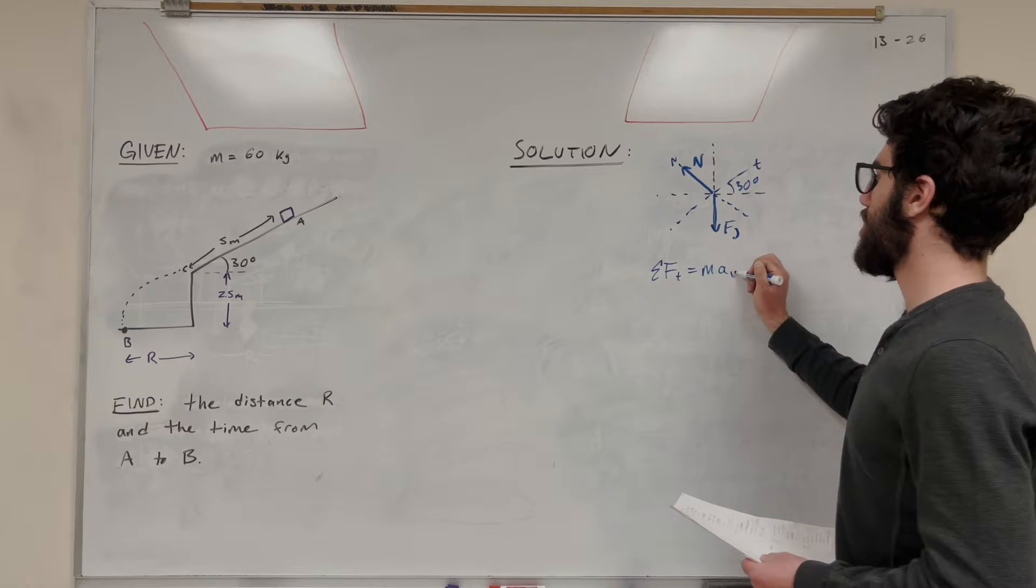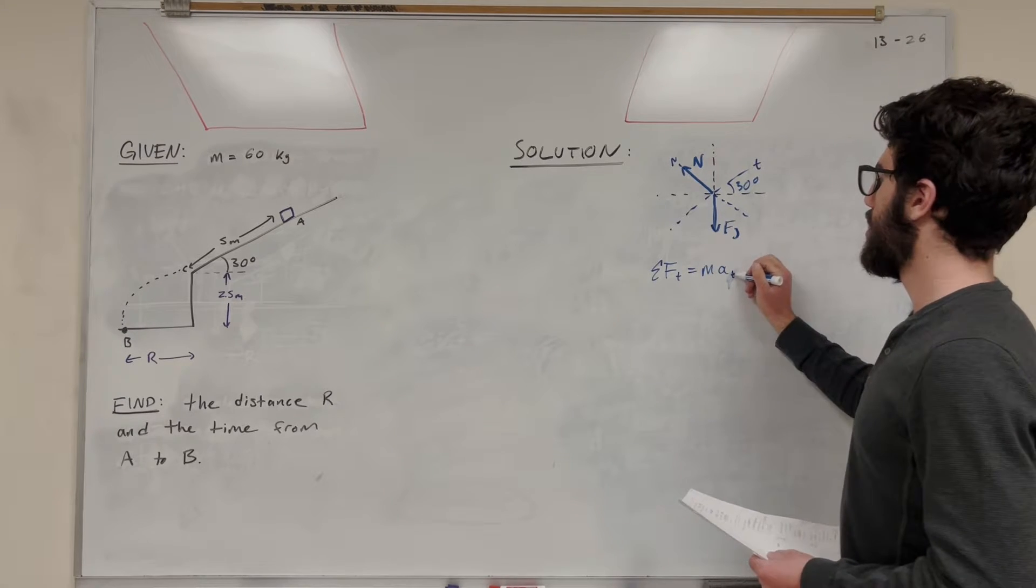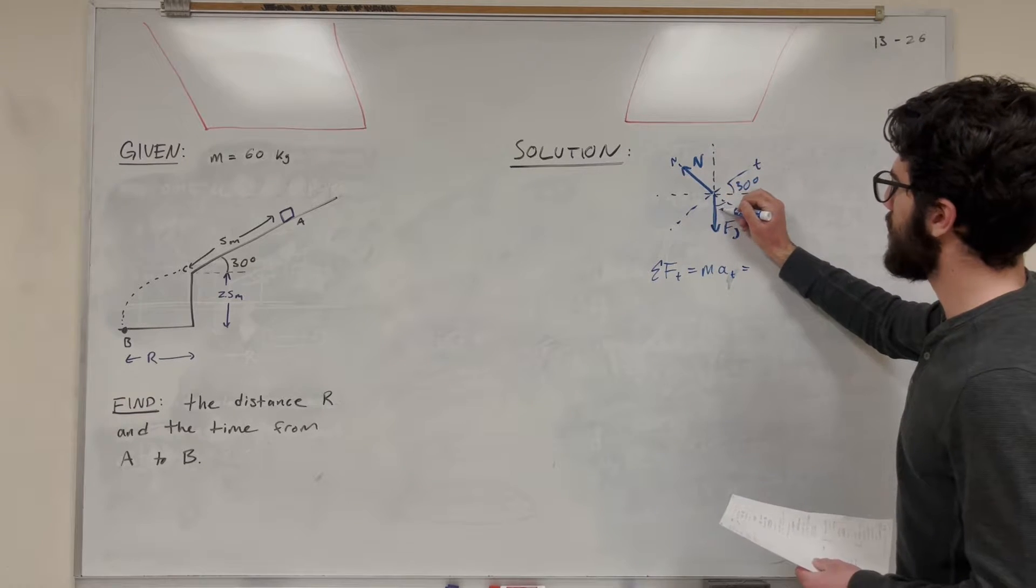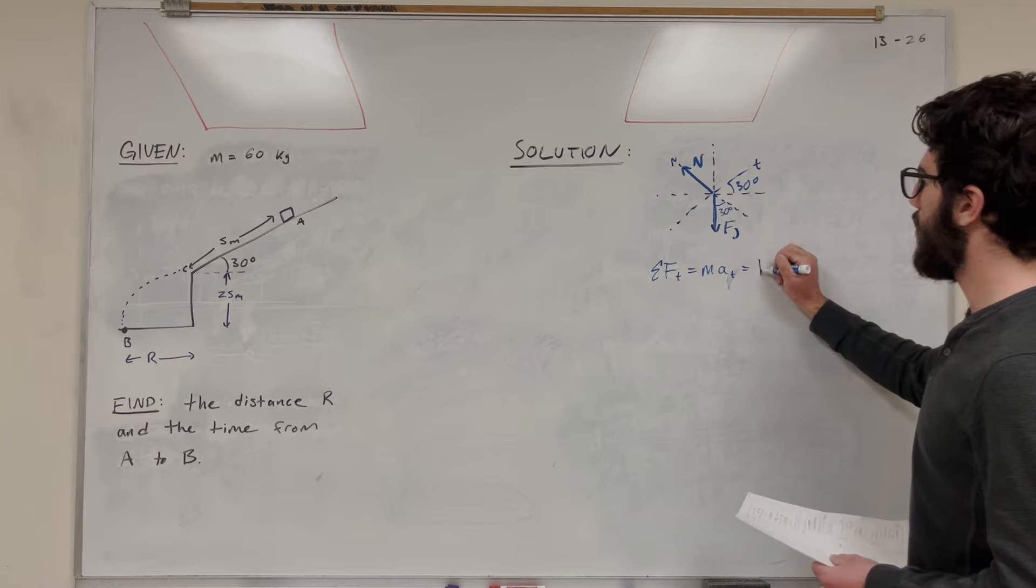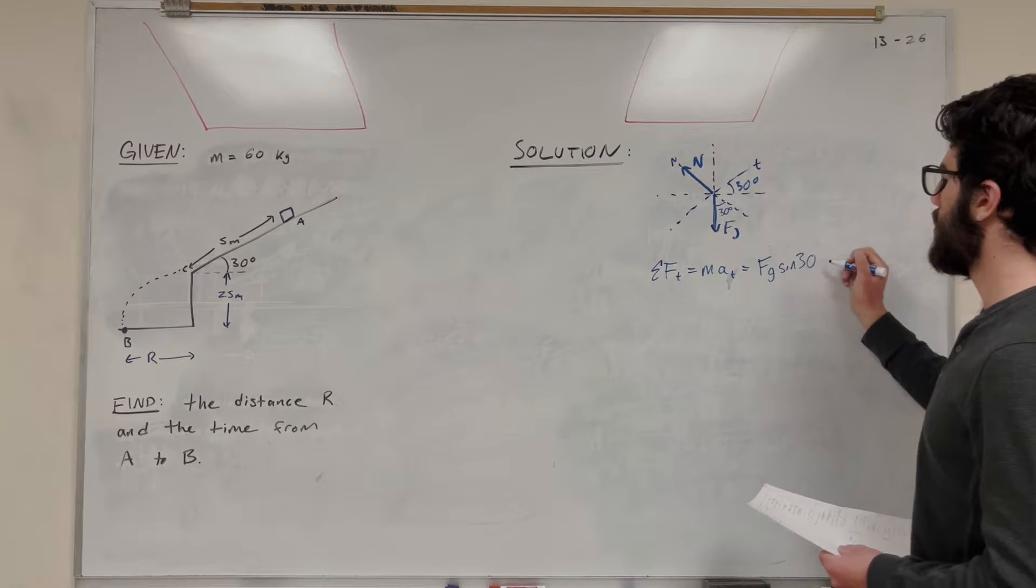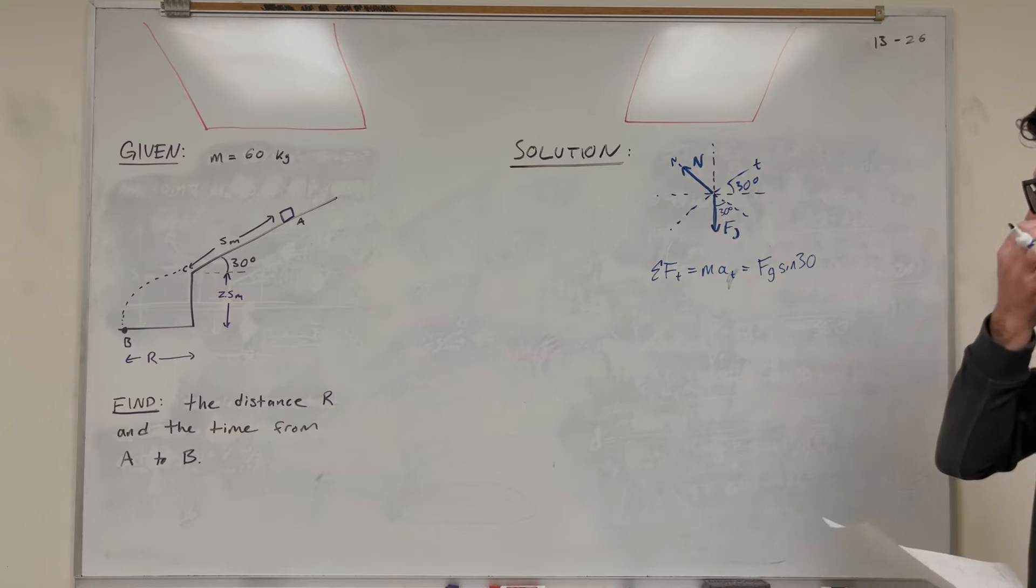So we want to find the acceleration in that direction. If we take sum of the forces in the tangent direction, it's going to be equal to mass times acceleration in the tangent direction. And what forces do we have? If we look at it, it's just going to be that force of gravity. This is 30 degree angle. This is going to be force of gravity, but this is going to be sine of 30.